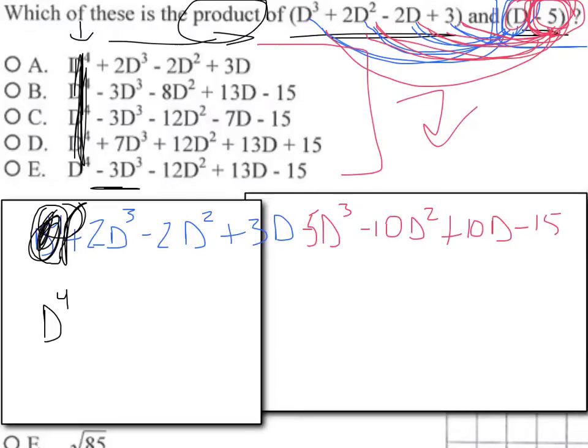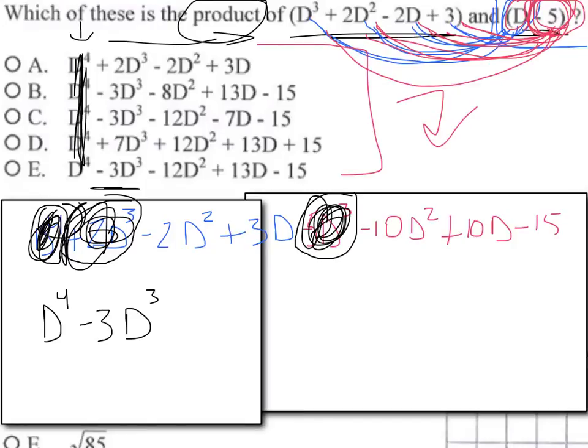I know this next step is going to knock some out. I want to take everything that has a D³. So what's positive 2D³ minus 5D³? The D³ stays the same; you're just subtracting the number in front. What's 2 minus 5? The negative is bigger, so it's negative 3D³. Boom, this problem's not correct. Boom, this problem's not correct. Process of elimination!